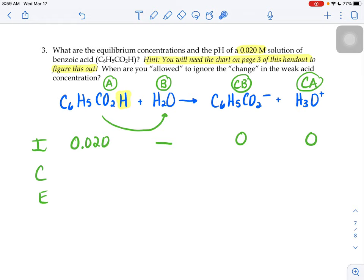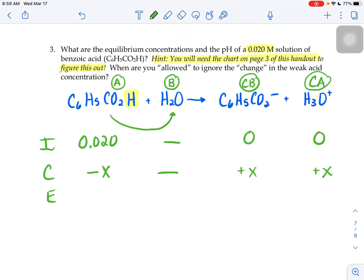Well before we get to that chart on page three, we do know that our benzoic acid is going to come down by some amount x, and because there's a one-to-one relationship between benzoic acid and the benzoate ion and H3O plus, that these guys are going to come up by some amount x. Water doesn't have a molarity, so at equilibrium this guy would be 0.02 minus x, this guy would be x, this guy would be x.